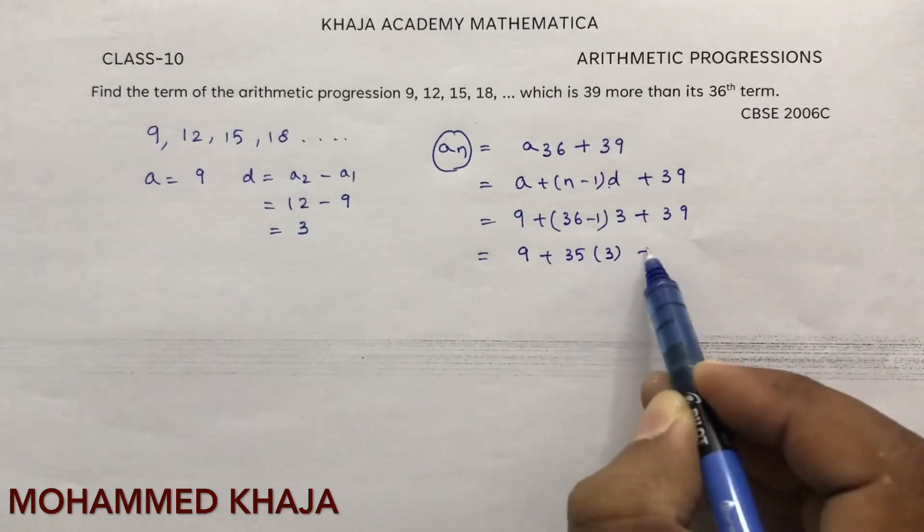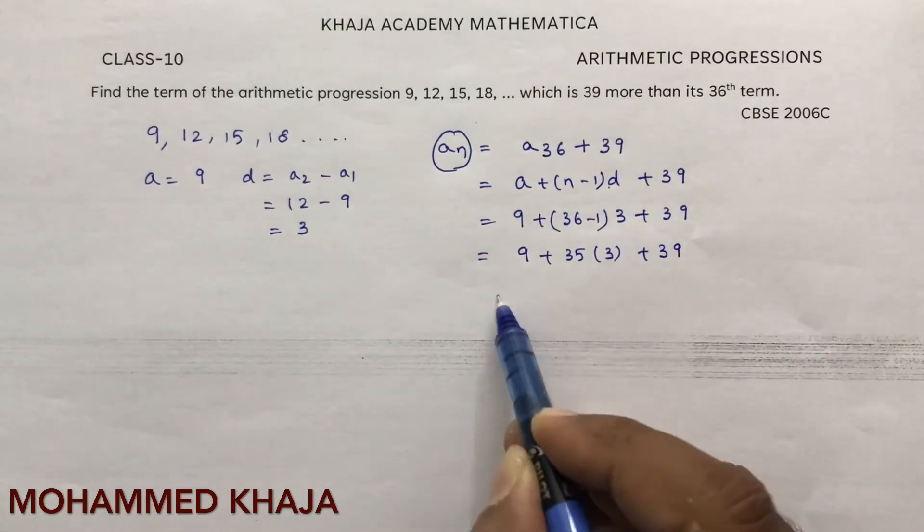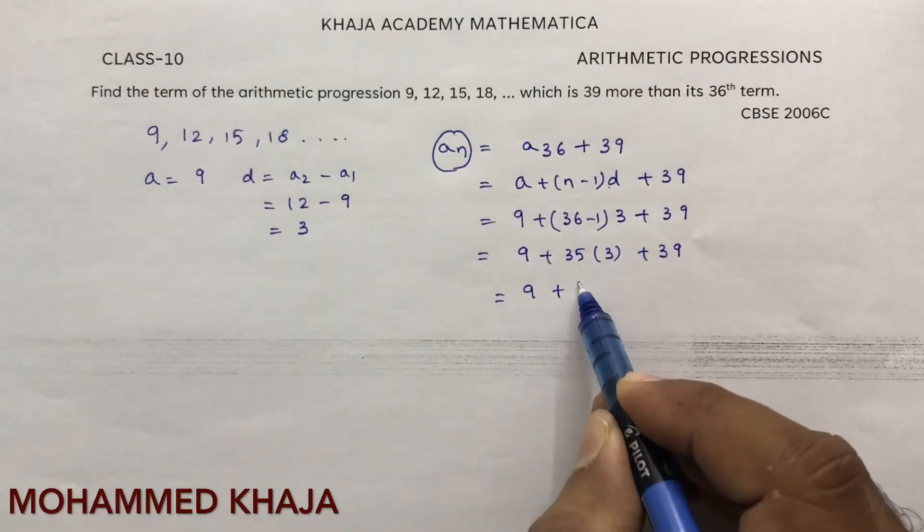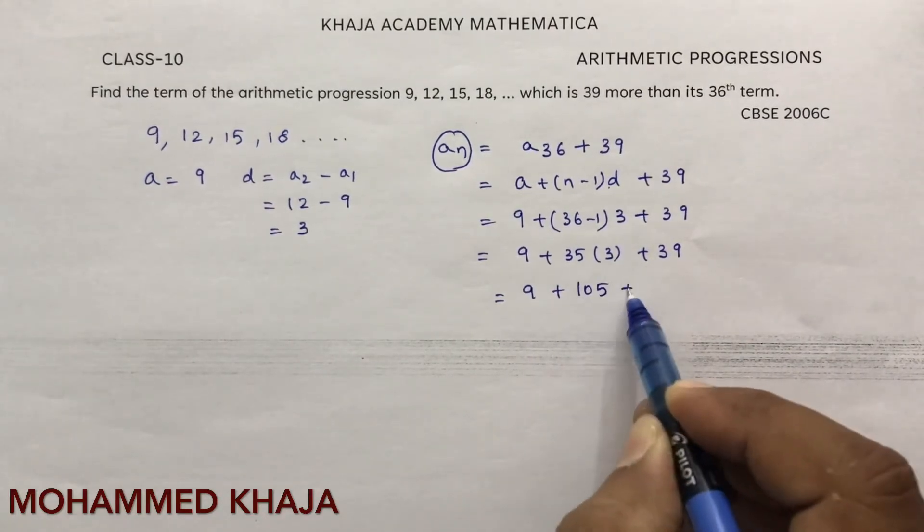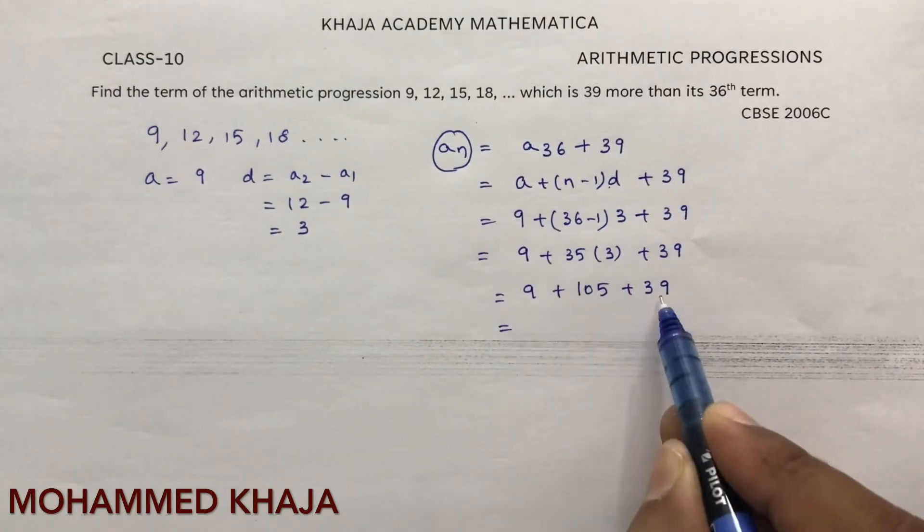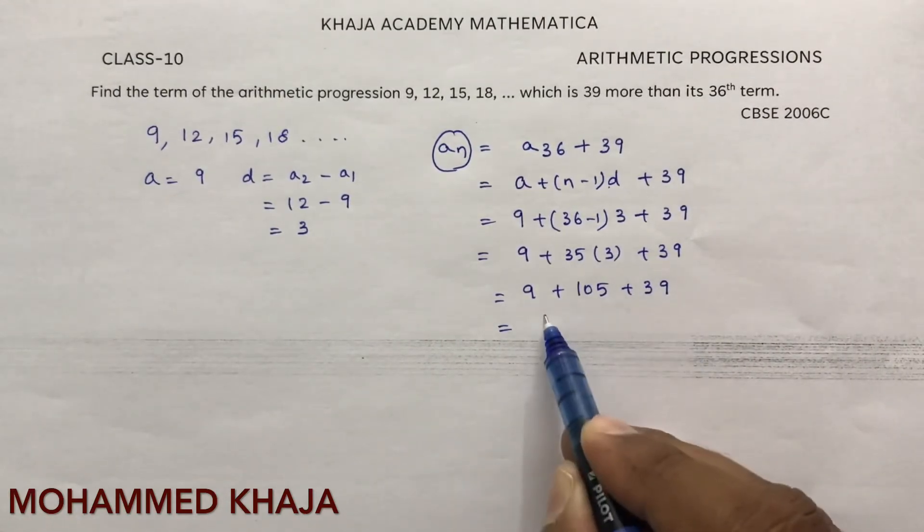9 plus 35 times 3 is 105 plus 39. So 9 plus 39 is 48, and 48 plus 105 is 153.